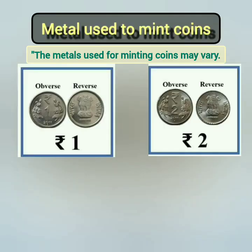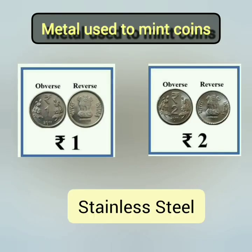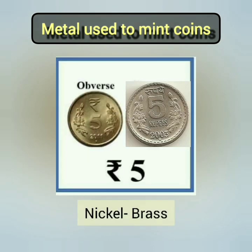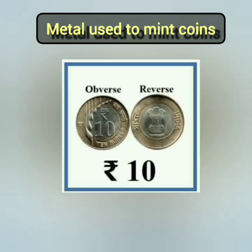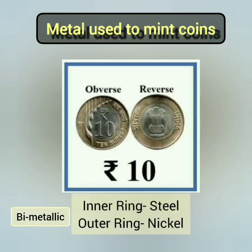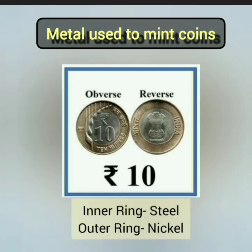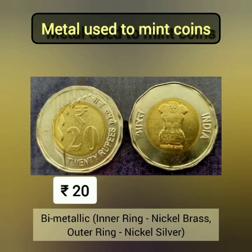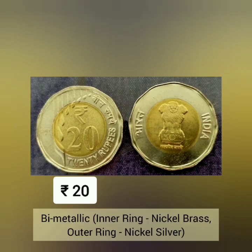The metal used for minting 1 and 2 rupee coins is stainless steel. The metal used for minting the 5 rupee coin is nickel brass. The 10 rupee coin is bi-metallic with an inner ring of nickel brass and an outer ring of nickel silver. The metal used for minting the 20 rupee coin is also bi-metallic with an inner ring of nickel brass and an outer ring of nickel silver.